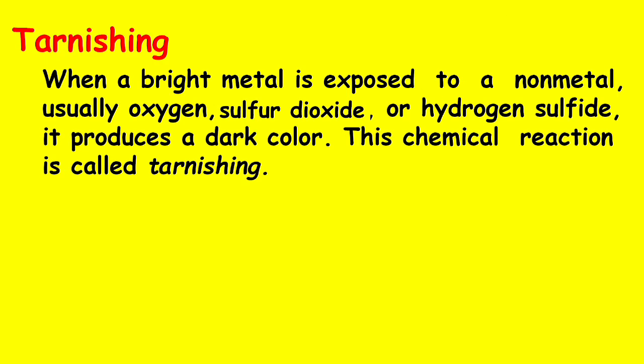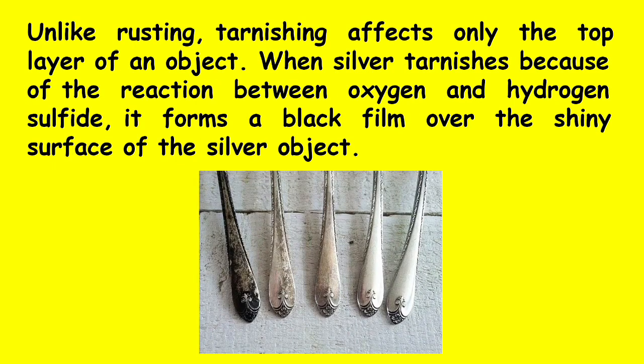Lastly, we have tarnishing. When a bright metal is exposed to a non-metal — usually oxygen, sulfur dioxide, or hydrogen sulfide — it produces a dark color. This chemical reaction is called tarnishing. Unlike rusting, tarnishing affects only the top layer of an object. When silver tarnishes because of the reaction between oxygen and hydrogen sulfide, it forms a black film over the shiny surface of the silver object.